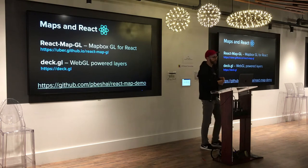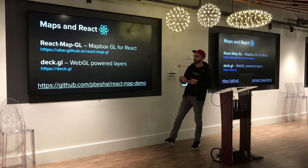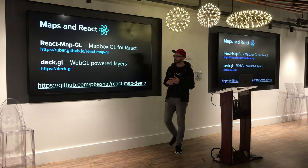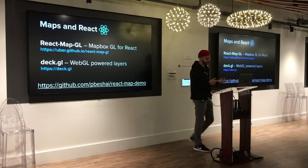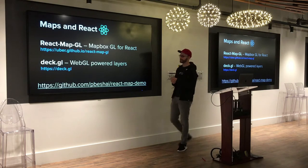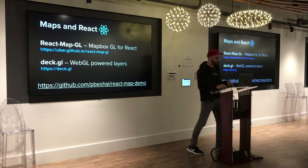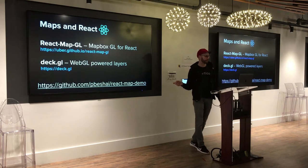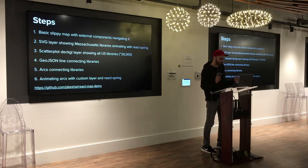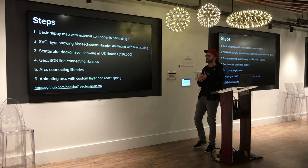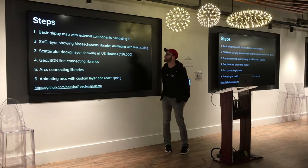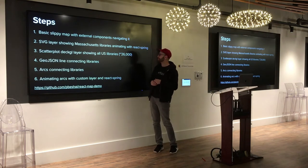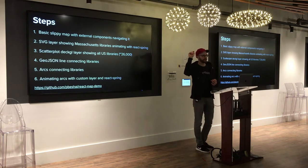When using React, the libraries I decided to use: ReactMapGL is a wrapper around the Mapbox GL.js API that lets you work in declarative React style and provides helpful layers and overlays. DeckGL is also by Uber — they apparently have a strong need for visualizing data on maps — and it uses WebGL to power big data layers. Here are the steps we'll go through: start from nothing, add a slippy map, configure it with Mapbox, get navigation components, use an SVG layer to show libraries in Massachusetts, then animate with React Spring.